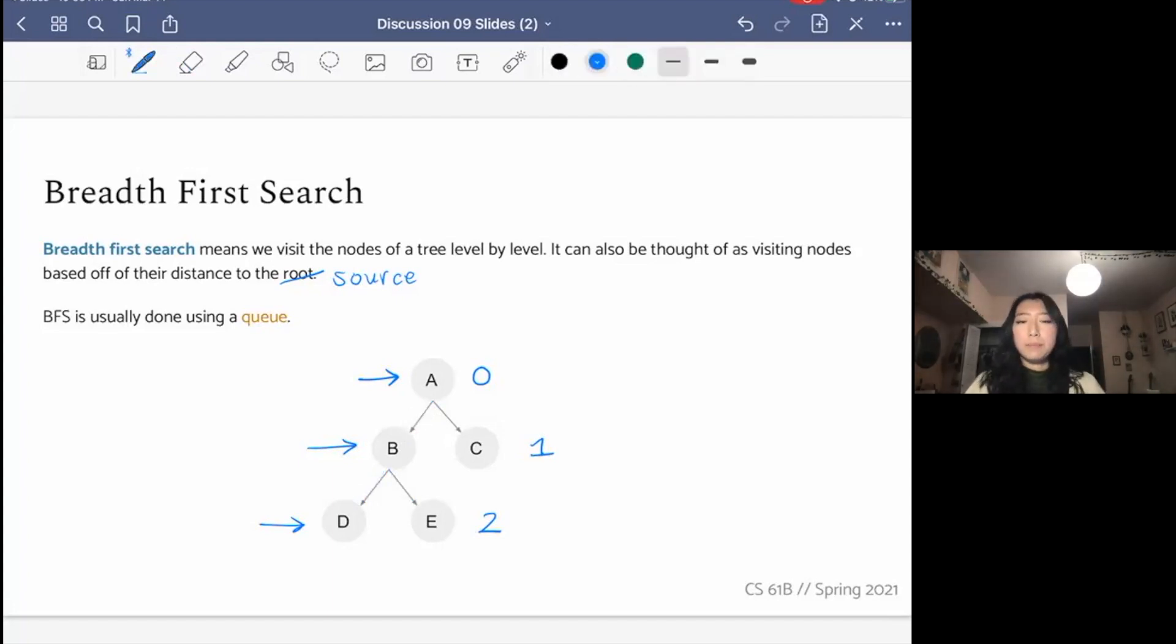Another way to think about this is that A is zero nodes away from the source or starting point, because A is our starting point. B and C are one edge away from our starting point. And so we visit the things with distance one next. And lastly, we visit the things that are two edges away from the start.